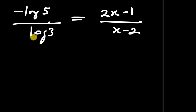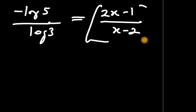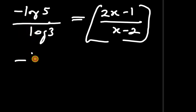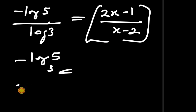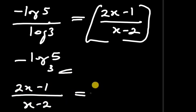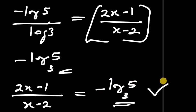So negative log 5 divided by log 3 equals 2x minus 1 divided by x minus 2, and that is exactly what we were asked to find. Simplifying using the change-of-base formula, this is negative log base 3 of 5. Therefore, the value of (2x−1)/(x−2) equals negative log base 3 of 5. That is the final answer.